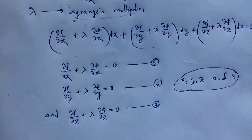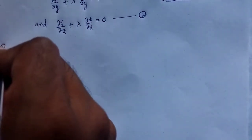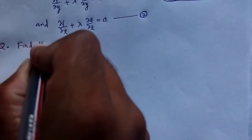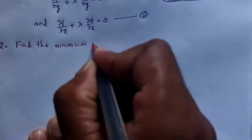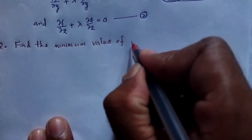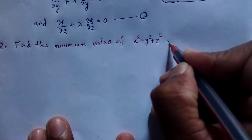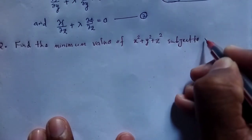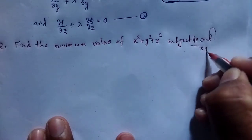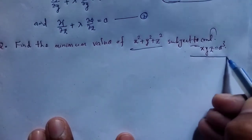Let us solve a question related to this. Using this method, we can easily solve the question. The question is: find the minimum value of the function x² + y² + z², subject to the condition xyz = a³.